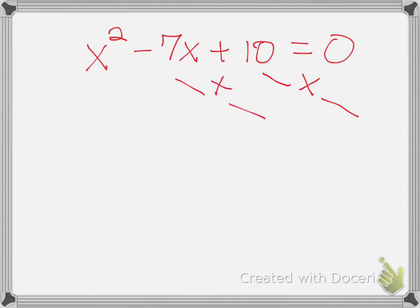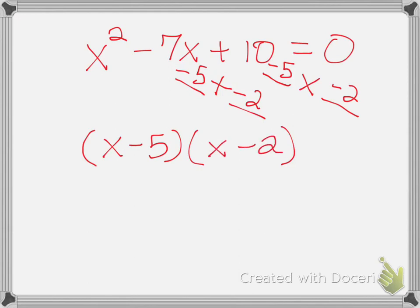And the two numbers that work are negative five and negative two. So since I have both of those numbers, I go ahead and write them out in factored form with x. Since my five is negative, it's going to say x minus five, and since my two is negative, it's going to say x minus two. By the way, if those are positive numbers, you'll put a plus sign.